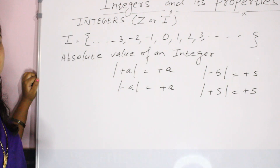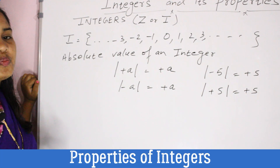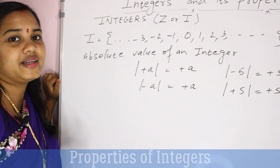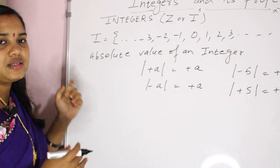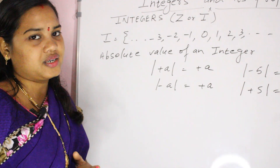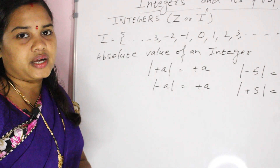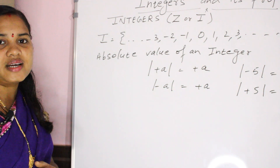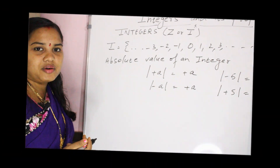Now, the important thing is we must know the properties of integers. The properties of integers are: commutative property, associative property, distributive property, multiplicative identity, additive identity, multiplicative inverse, and additive inverse. Let us know them one by one.